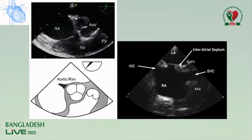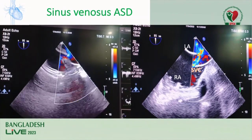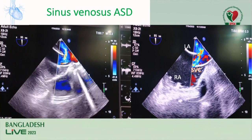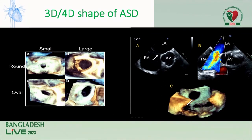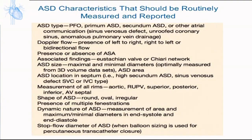This is a retro-aortic rim. This is a sinus venosus type ASD. Unroofed coronary sinus shows shunt from left to right atrium through the coronary sinus. This is the 3D or 4D shape of ASD — round or oval, small and large.